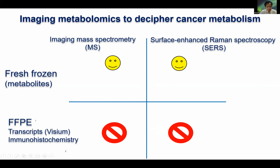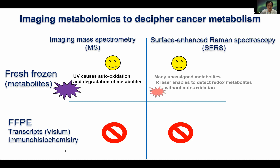The FFPE sample allows us to collect information about the transcript, or if we use immunohistochemistry, we can see the localization of proteins in the tissue. However, once the tissue is treated with FFPE, we cannot see any information about metabolomics because it's gone. So in order to obtain metabolomics information, we need a fresh frozen sample. That means, to collect multi-omics data, we need to go back and forth between fresh frozen and FFPE together with pathological findings.